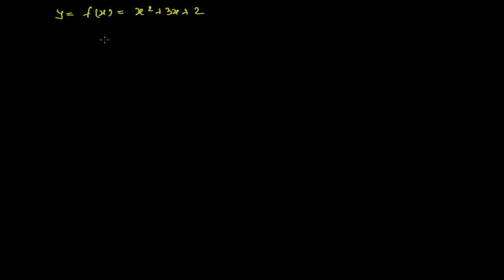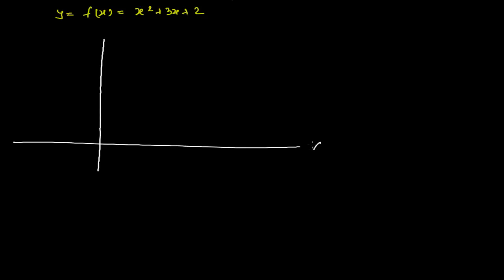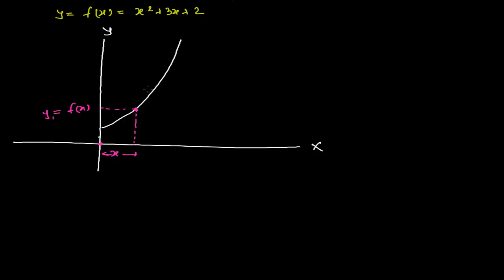Let me draw the figure. This is my x-axis and this is my y-axis. The graph of this function will look something like this. Now we need to find the derivative at a particular point — the slope at a particular point. To understand this in generalization, let me take two points. The first point is x distance away from the origin, so its corresponding y-coordinate will be f(x), as we learned in the previous video.